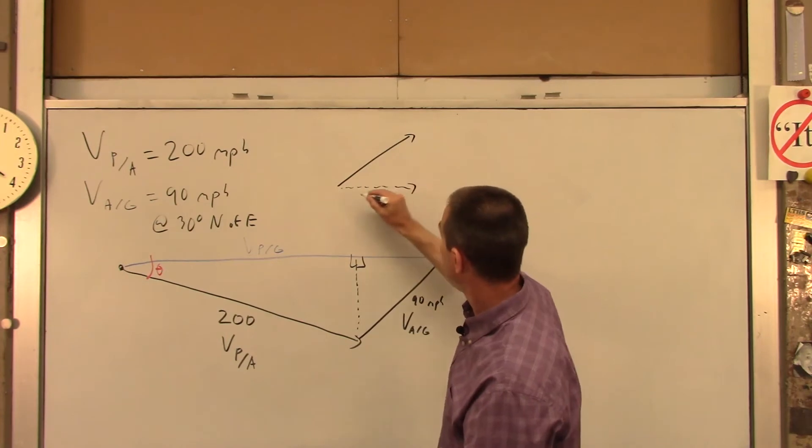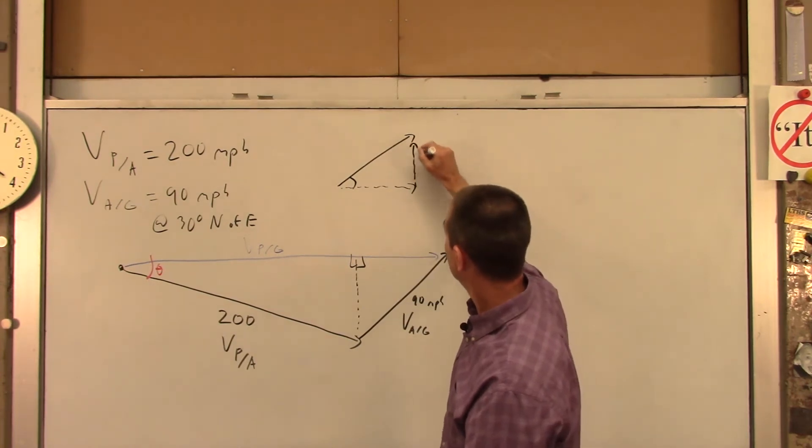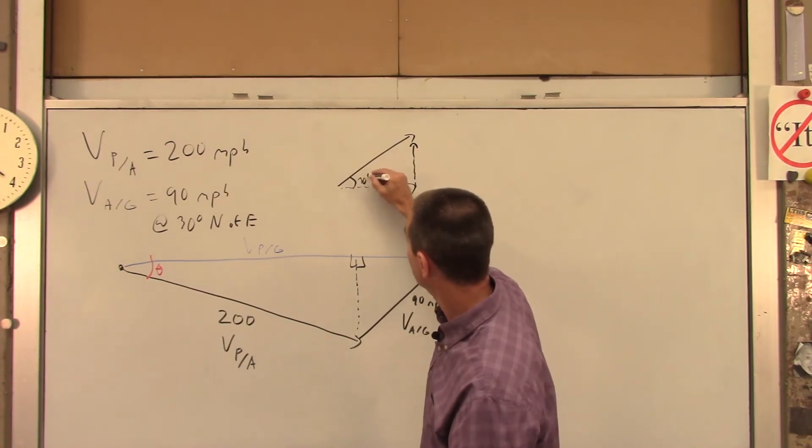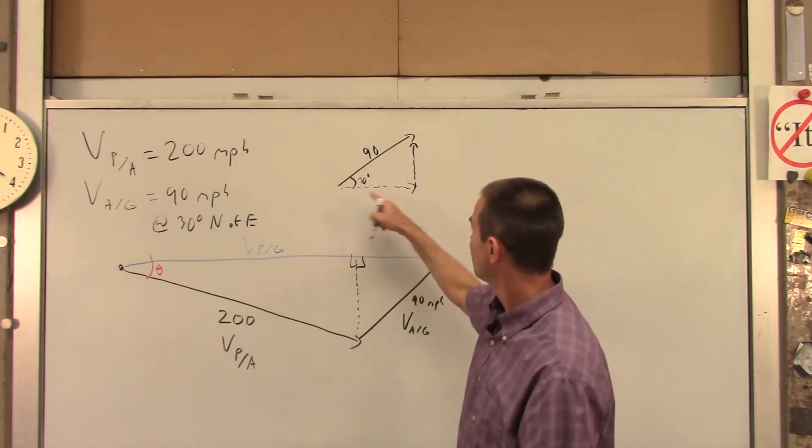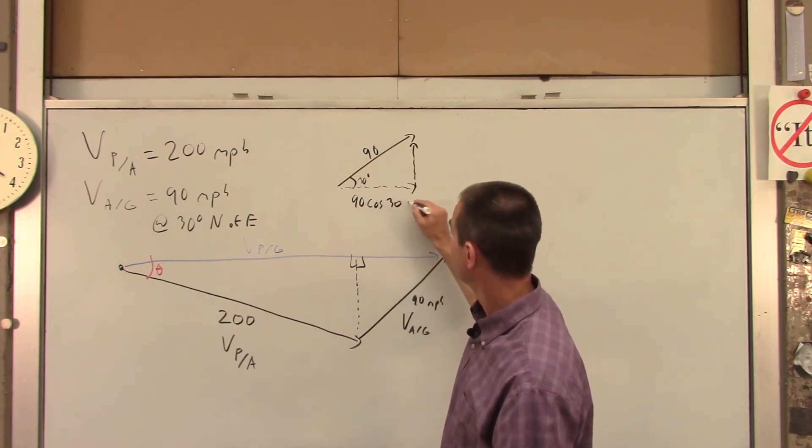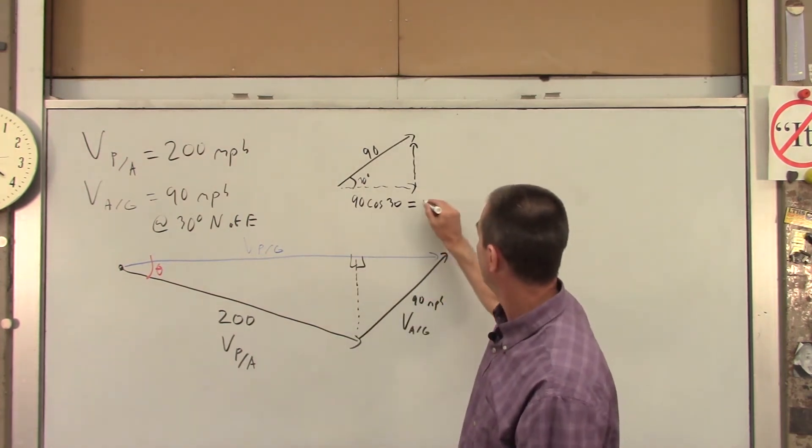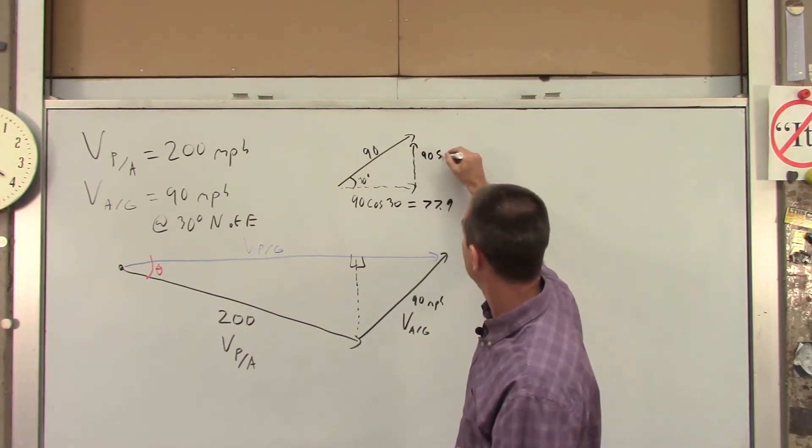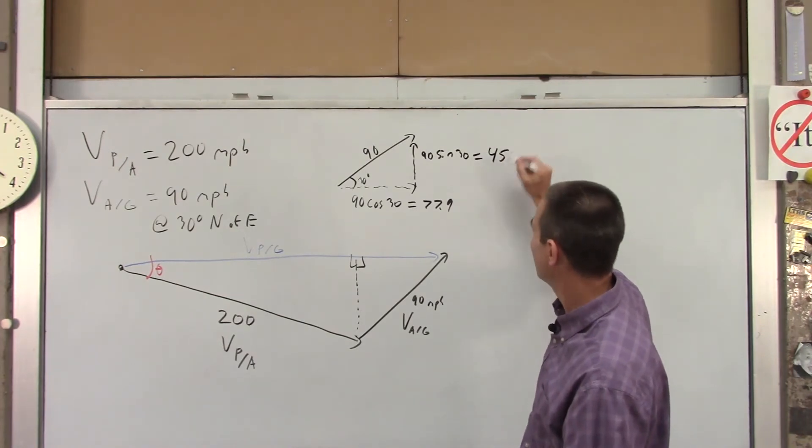We want to find the velocity of the air in the horizontal direction and the vertical direction, in other words, east and north. And we're given that this angle here is 30 degrees, and we're given that this is 90. So finding the two legs of that triangle is pretty easy. The eastward leg would be 90 cosine of 30, which if you do that in your calculator, is 77.9. And this northward component will be 90 sine of 30, and hopefully you don't need a calculator for that. That's going to be 45 miles per hour.